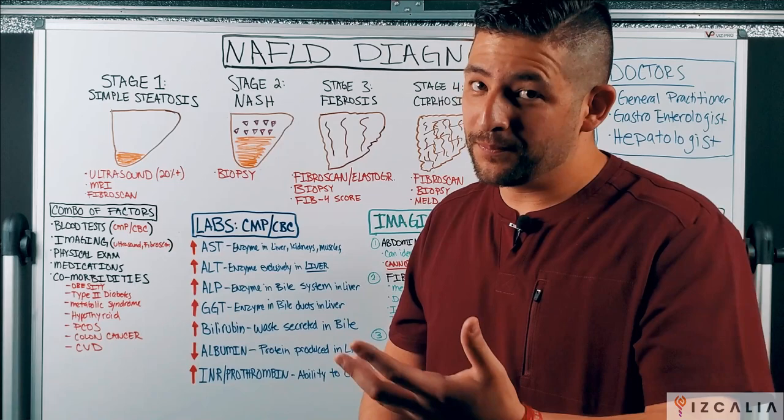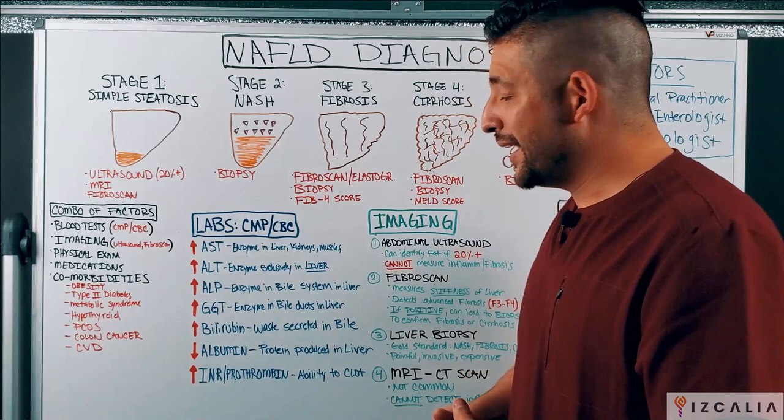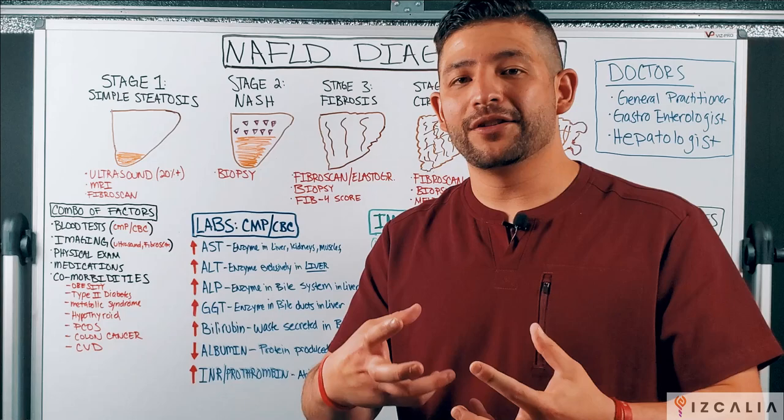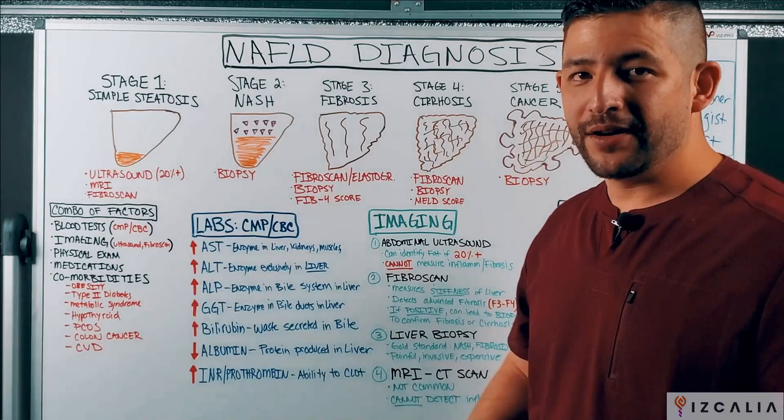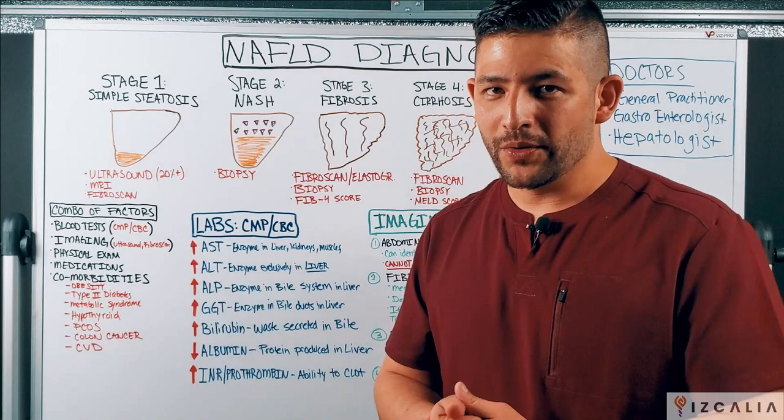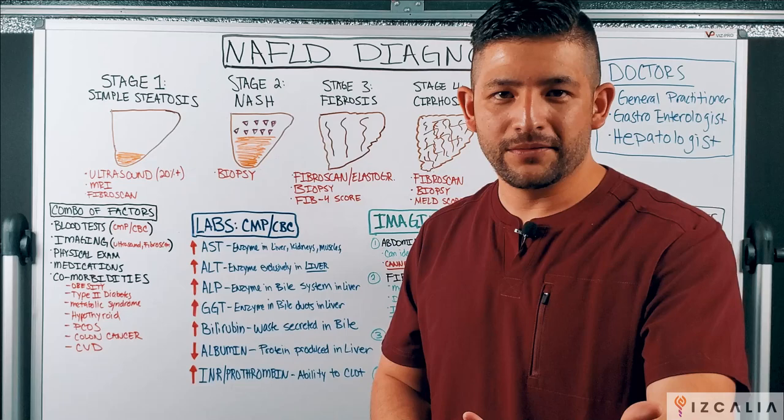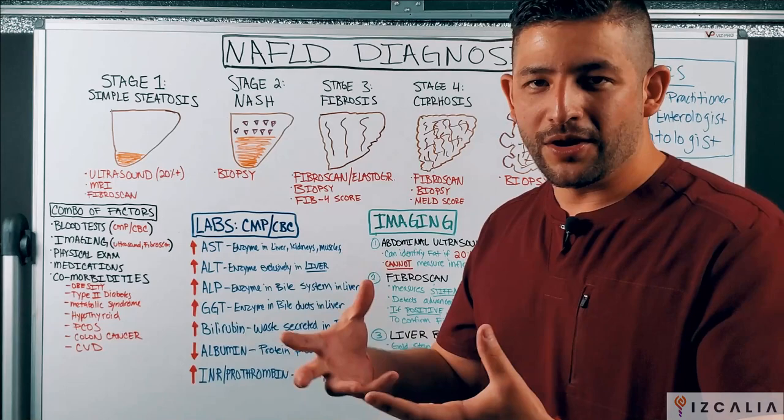The next one is GGT — another common enzyme specifically found within the bile ducts of the liver, very similar to ALP. They're supposed to only be found in those areas. If they're found in the bloodstream, that means there's some kind of leakage, which points to damage or dysfunction. Think of your car leaking oil — the oil is not supposed to be on the floor underneath your car; it's supposed to be within the engine itself. Very similar situation here.